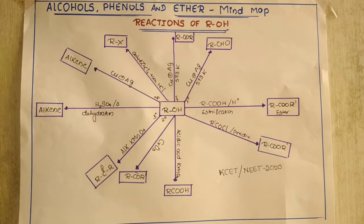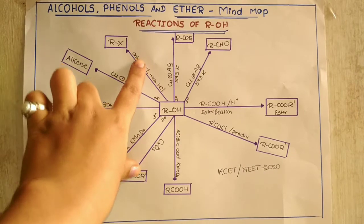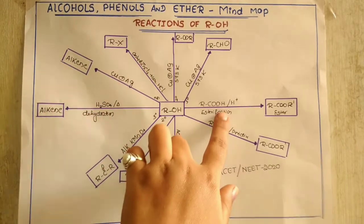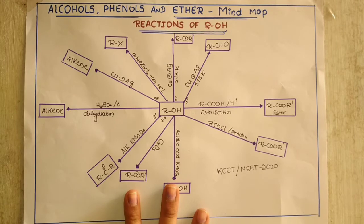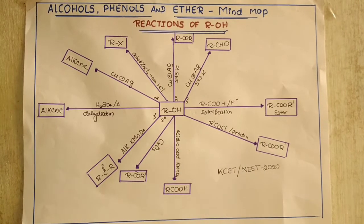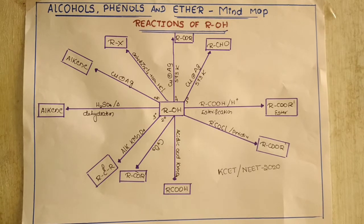This is quite useful for the Karnataka CET as well as for the NEET exam, where you can remember the reactions and the reagents very easily. If you know the role of reagents given here, you can predict the product in an easy way in less time. These are the reactions of alcohol that I have given — there are plenty of reactions available for alcohols, and I have taken some important ones here.